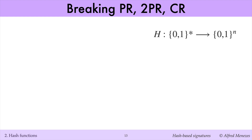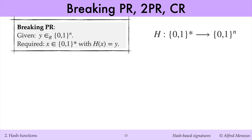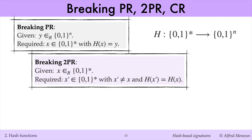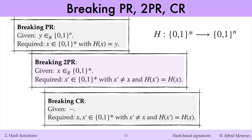Based on the definitions, we can concisely summarize what it means to break each property. To break preimage resistance, you're given a randomly selected hash value Y, and you have to find any message X whose hash equals Y. To break second preimage resistance, you're given a randomly selected message X, and you have to find a second message X′, different from X, with the same hash as X. To break collision resistance, you're given nothing, and you have to find two distinct messages X and X′ which have the same hash value.